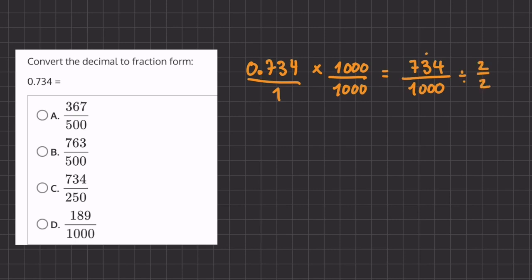Now it might be a little tough to recognize what 734 divided by 2 is, so let's break up this number. We can break it up into 700 plus 30 plus 4, and we'll divide each number by 2.